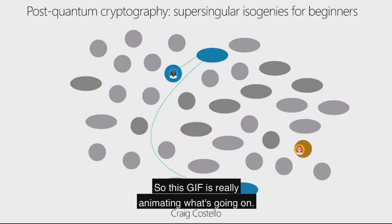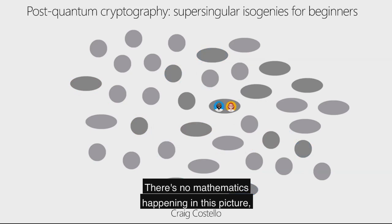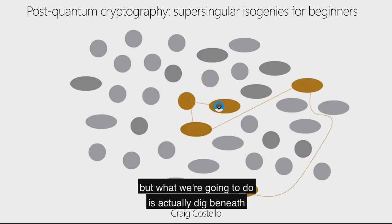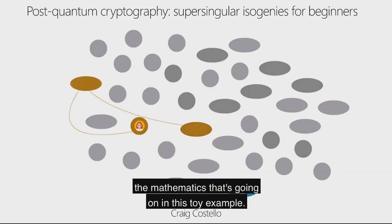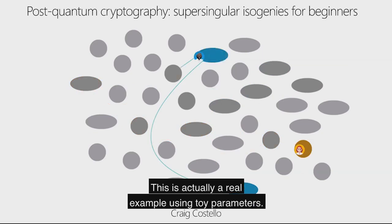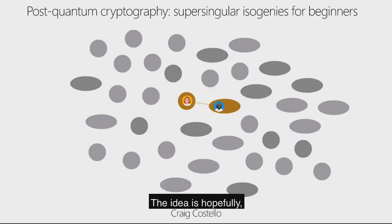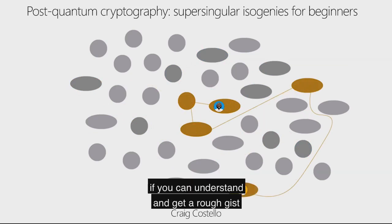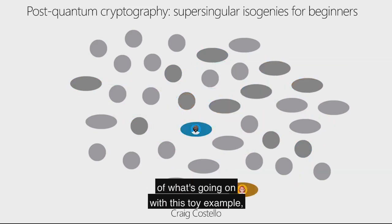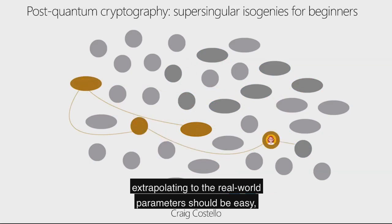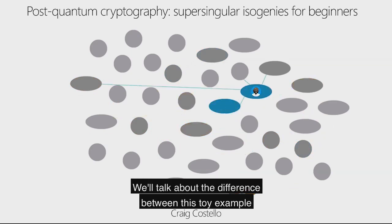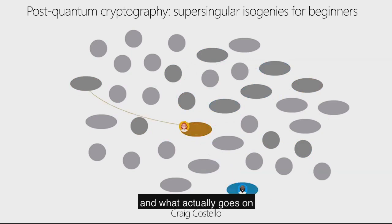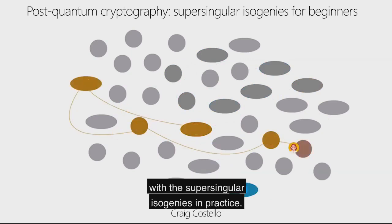This GIF is really animating what's going on. There's no mathematics happening in this picture, but what we're going to do is dig beneath the picture and look at the mathematics in this toy example. This is actually a real example using toy parameters. If you can understand the rough gist of what's going on with this toy example, extrapolating to real-world parameters should be easy, and we'll do that in one slide at the end of the talk.